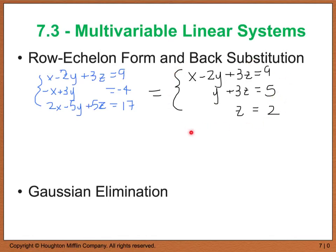This is a row echelon form. You may come up with different equations, but the end result of z equals 2 would be the same. Notice we have a stair-step pattern: x has a leading coefficient of 1, then y has a leading coefficient of 1 and consists of only y's and z's, and z has a coefficient of 1. We can back-substitute z into the second equation to find y, then plug y and z into the first to solve for x.